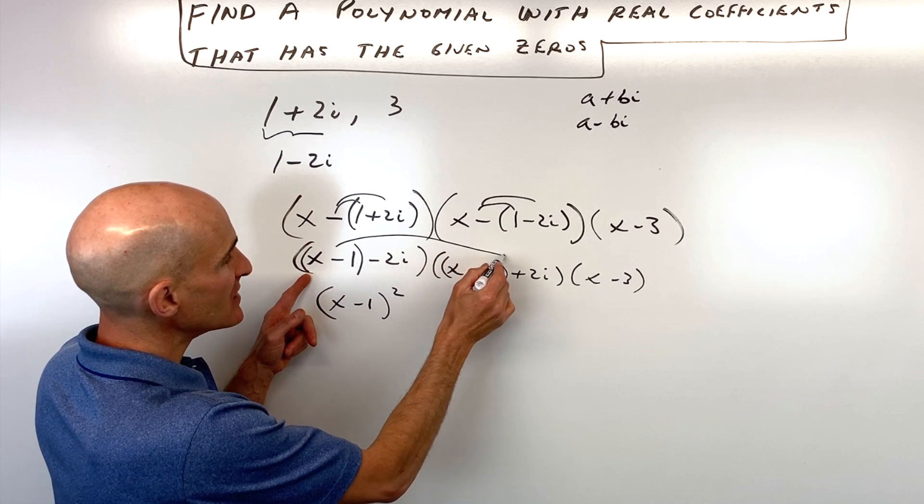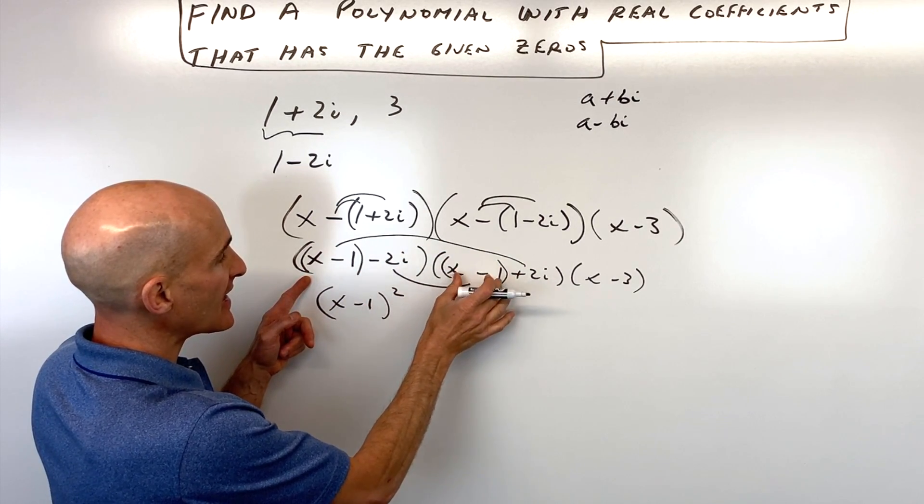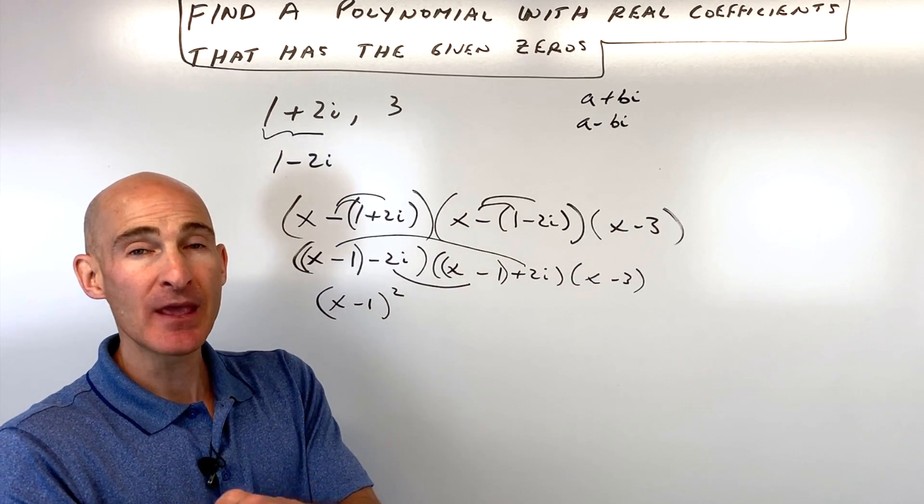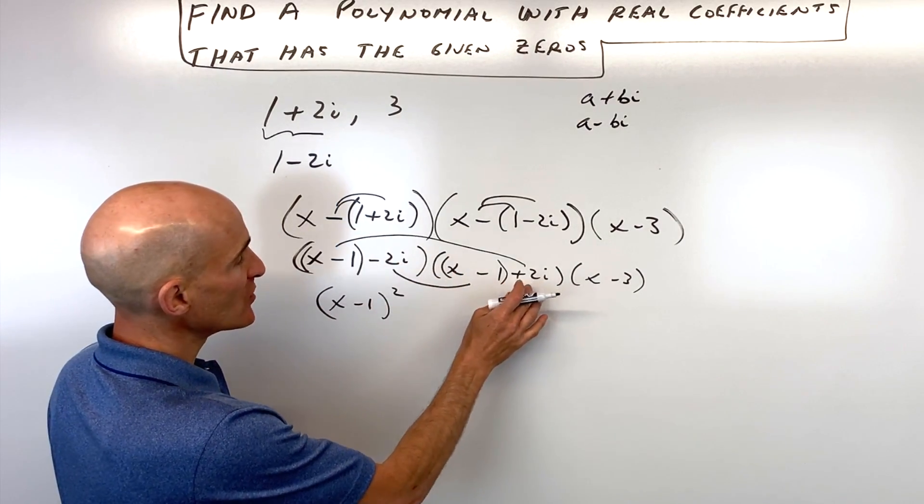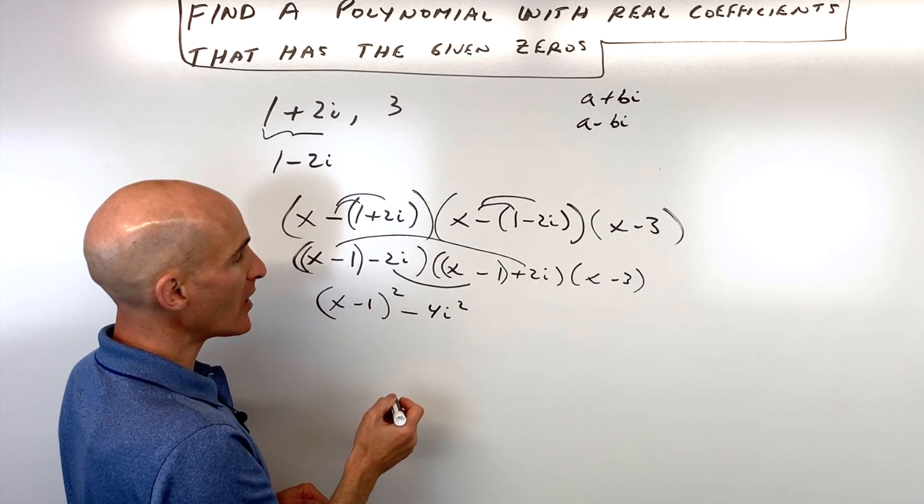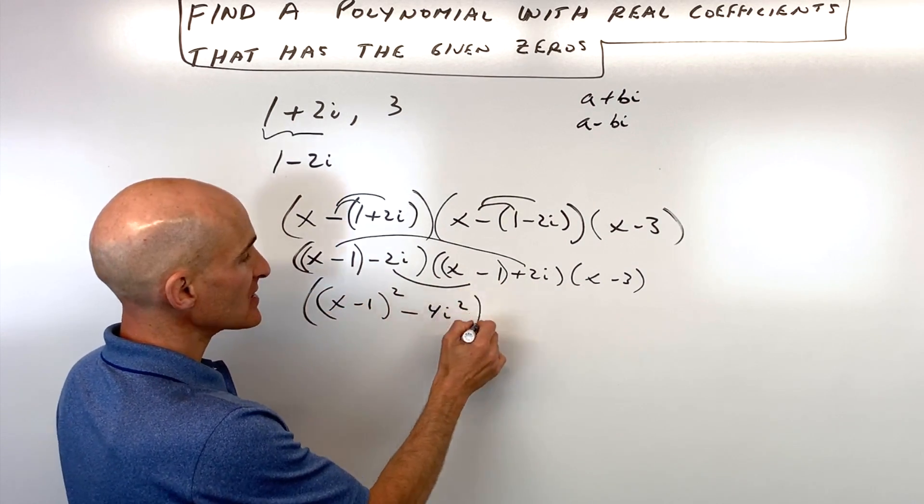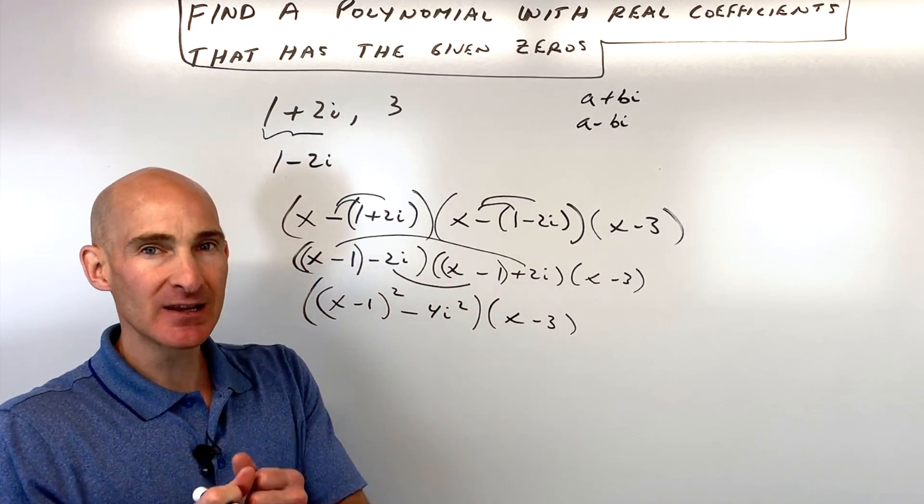Now the outside, or if I distribute here, I get x minus one times two i. And if I do the inside, I get x minus one times negative two i. Since one's positive, one's negative, those actually cancel. And then the last terms we get negative two i times positive two i, which is negative four i squared. And that whole thing is multiplied by the x minus three. So this is a nice technique to make it a little bit simpler.